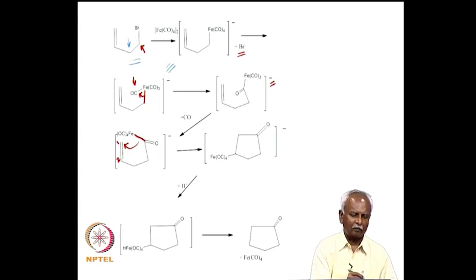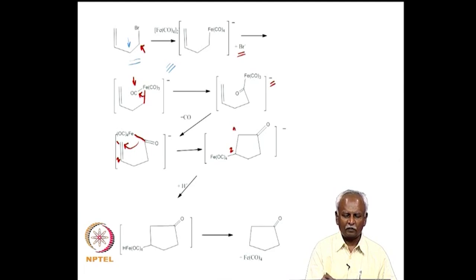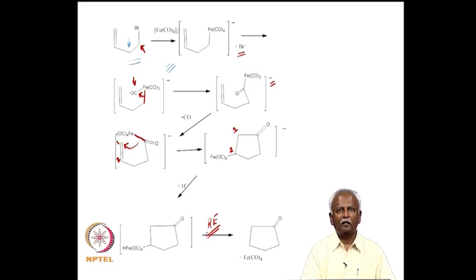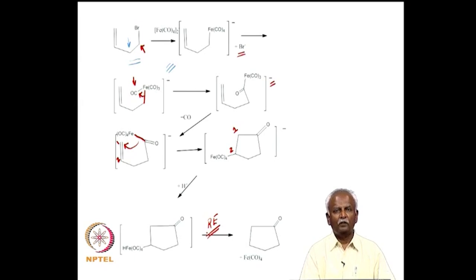After migratory insertion onto the alkene, the carbon atom can pick up a proton and then undergo reductive elimination to give a cyclic product. You can imagine the synthesis of more complex structures — such as a cyclopentanone — constructed with Collman's reagent chemistry. This involves a series of migration and insertion reactions of carbon monoxide to generate the cyclic structure.